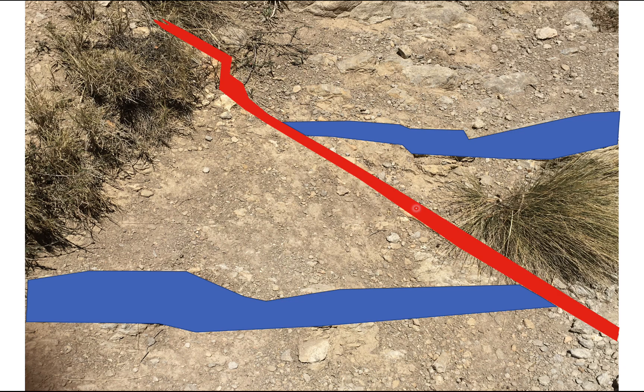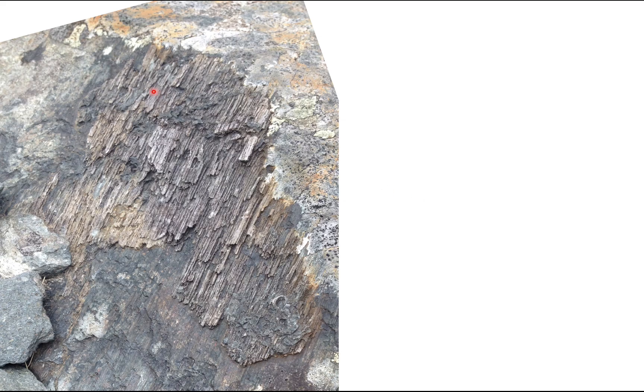So here is a really nice kinematic indicator. This is a fault plane. And these lines on here are called fault plane lineations or slickenside. And in this case, they're actually little quartz crystals which are growing on the fault plane. They grew as the fault was active.